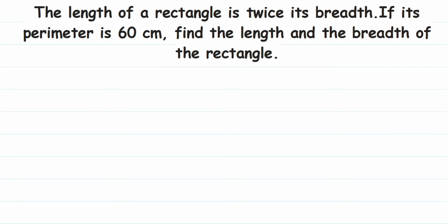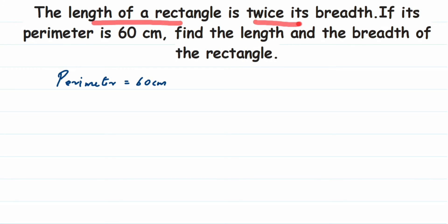They have given the perimeter which is 60 centimeters, and they have asked us to find out what is the length and breadth of this rectangle. So let us write down what we know from the question. Perimeter is equal to 60 centimeters. They have not given us the length or breadth directly, but they have given the relation that length of the rectangle is twice its breadth.